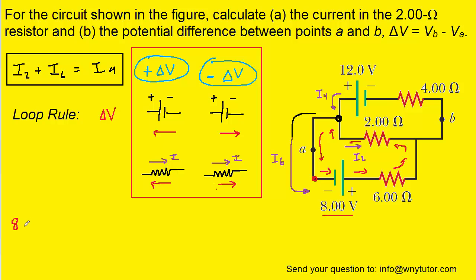We omit writing V for volts to keep the equation clean. Continuing along, we encounter a resistor. The potential change across a resistor equals the current times the resistance. Since we are moving with the direction of I6, that is a negative potential change, giving us negative 6·I6 in the equation.